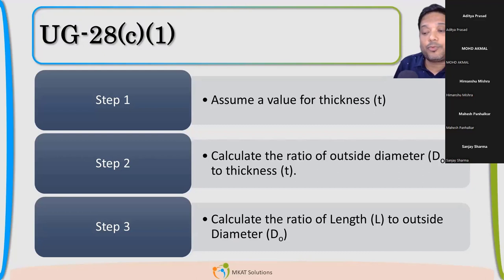Step two, calculate the outside diameter. Why? Because we have to calculate D0 by T ratio. Third is length of the vessel. Now this length of the vessel is a little bit different. It's not the tan to tan length of the vessel. It's the length of the vessel between line of support. What is line of support and what length we are talking about? We are going to see it.